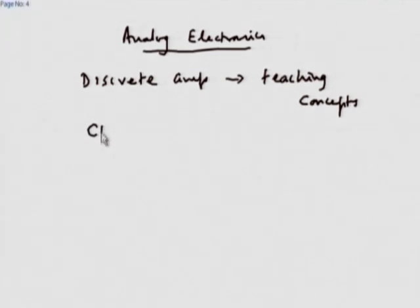Today afternoon you have a BJT amplifier — a common emitter amplifier. I do hope that all of you get the circuit working, but I am sure at least 50 percent of you would have difficulty. The reason being analog electronics: unless you design everything properly, unless you connect everything properly, unless everything is correct, things would not work. And finally, if things do not work, how do you interpret? So discrete amplifiers — a simple amplifier like a common emitter amplifier — is one of the best to teach concepts: the concept of a signal, amplification, nonlinearity, overload — all easily taught through simple discrete circuits.